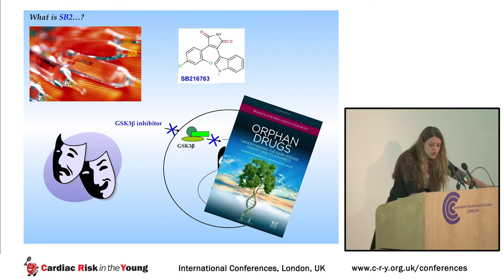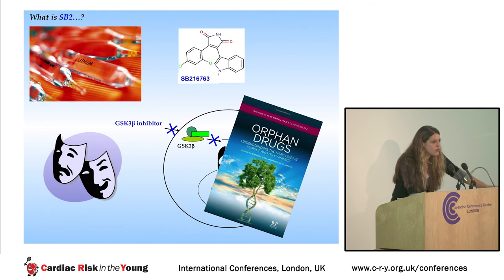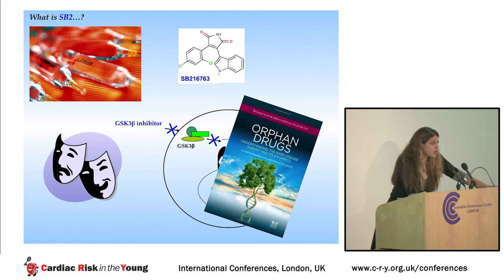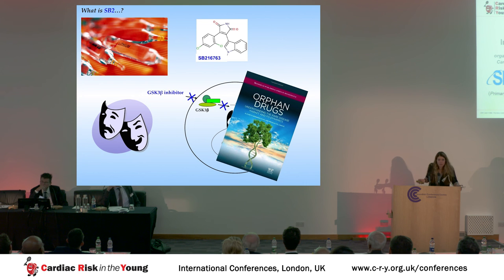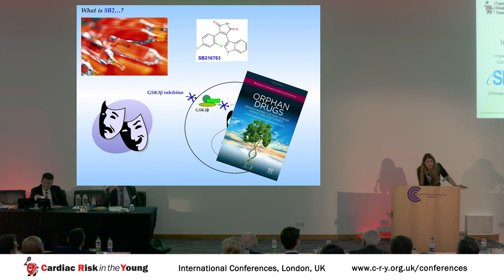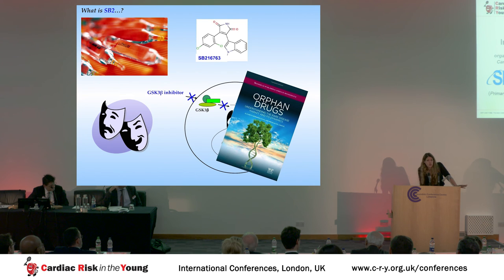Before I close, you might wonder: what is this drug? SB216763 came to clinical trials over 20 years ago as an analog of lithium, and it was used to treat patients with schizophrenia and bipolar disorder. Like lithium, this drug is annotated as a specific inhibitor of glycogen synthase kinase 3 beta. But unlike lithium, it did not help patients with neurological disorders, so it never even made it to phase 2 clinical trials, and it remained in a library of orphan drugs for over 20 years - until it cured the fish with ARVC.